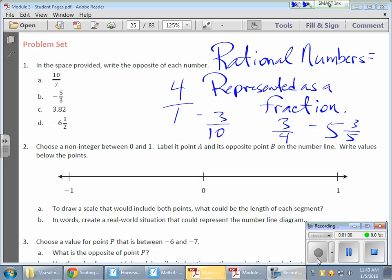Now that we have that understood, let's move on. That was the focus of today, taking a look at rational numbers. In the space provided, write the opposite of each number. If I have ten over seven, the opposite would be negative ten-sevenths. The opposite of negative three over five would be positive three over five, and so on.